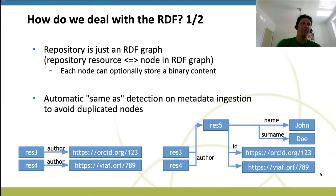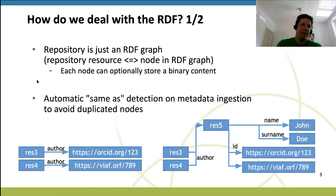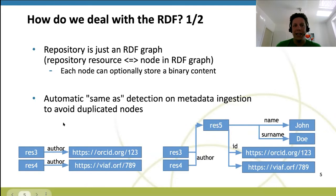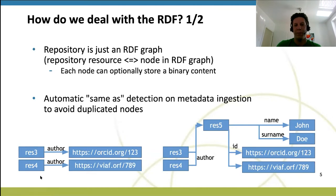To make it work, we implemented a repository where each repository resource has a corresponding node in the RDF metadata graph. Also, every node in the RDF metadata graph has a corresponding repository resource. Optionally, every repository resource can store a single binary content. In our solution, every repository resource can store many identifiers — in RDF terms, every node in the metadata graph can have many URLs, and none of them is better than another; all are equal. When data are ingested, any of them can be used, and the repository automatically recognizes any identifier and maps it to the corresponding repository resource, avoiding data duplication.